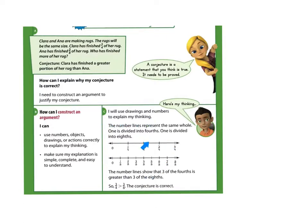These number lines represent the same whole, zero to one. One is divided into eighths, one is divided into fourths. The number lines show that three fourths is greater than three eighths. So three fourths is greater than three eighths — the conjecture is correct.